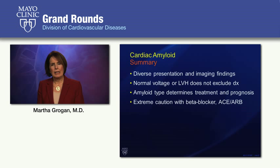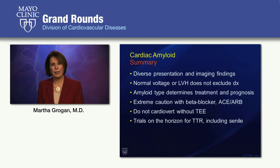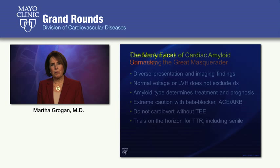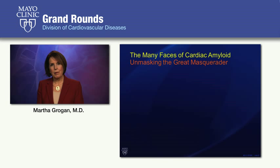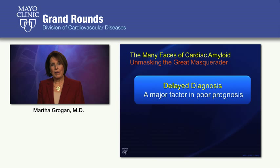Be cautious using beta blockers, ACE inhibitors, or ARBs unless you have a well-defined indication. Don't cardiovert without a transesophageal echo unless it's an emergent situation. There are exciting trials on the horizon for familial and senile amyloidosis. Many have compared amyloidosis to the great masquerader — the tuberculosis of our era. As clinicians, we need a heightened index of suspicion and must recognize all the various forms in which it may present. Delayed diagnosis is a major factor in poor prognosis, and we need to make the diagnosis earlier.